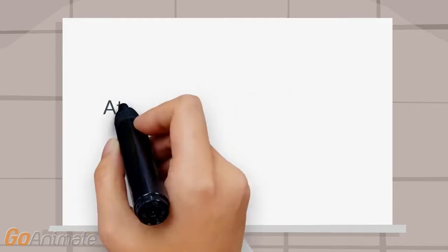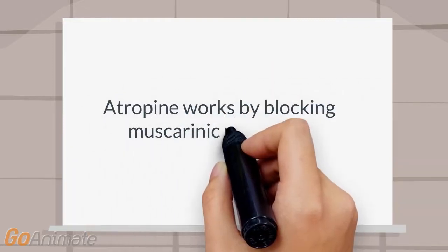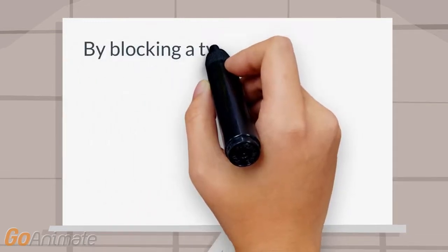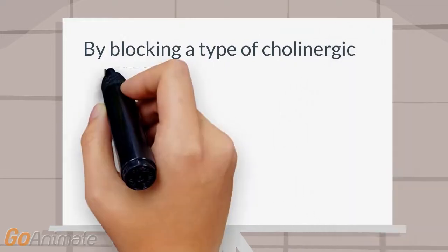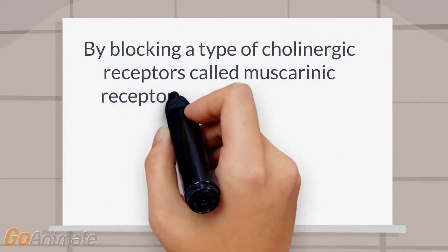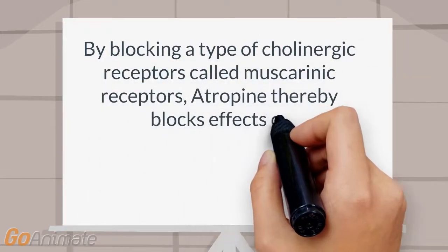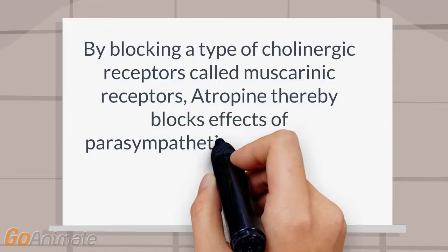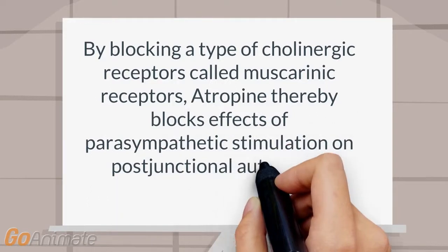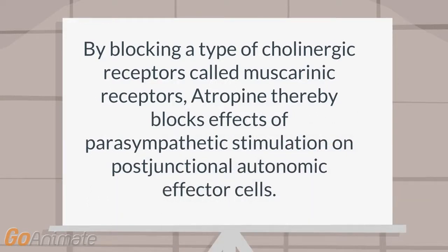Number 4: Atropine works by blocking muscarinic receptors. Number 3: By blocking a type of cholinergic receptors called muscarinic receptors, atropine thereby blocks effects of parasympathetic stimulation on post-junctional autonomic effector cells.